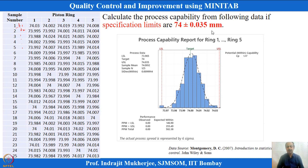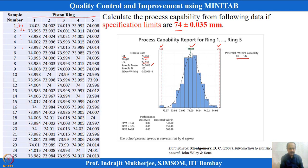The MINITAB output shows LSL at 73.965, USL at 74.035, and target at 74. The CP index is calculated as 1.17. The sample mean from 125 observations (25 groups × 5) is approximately 74.0012. The standard deviation within is calculated from R-bar by d2, where d2 is determined by the subgroup size of 5.